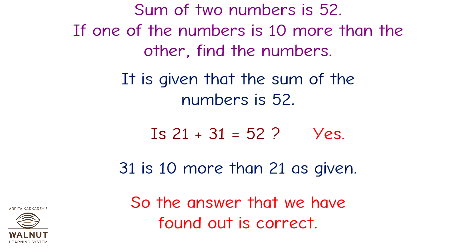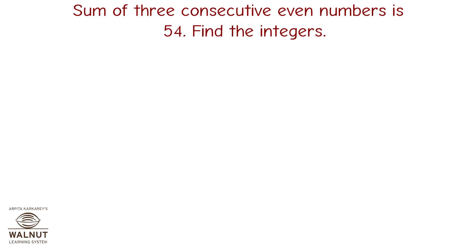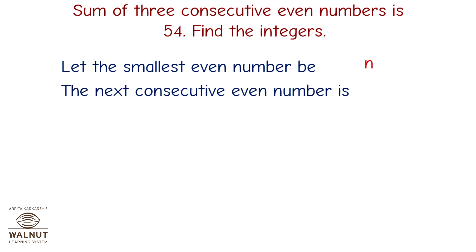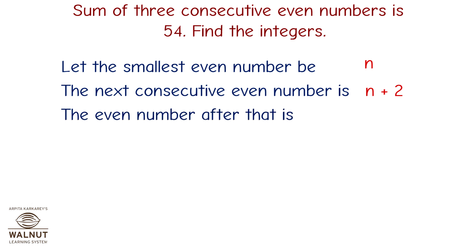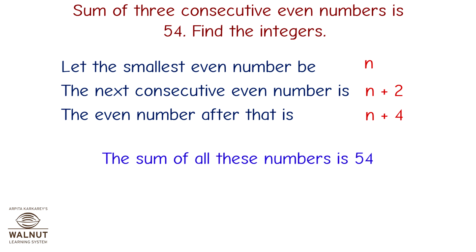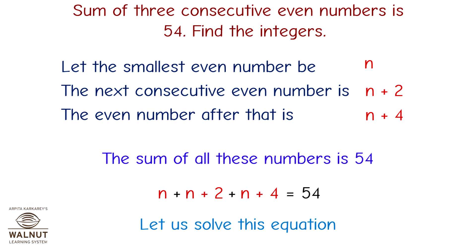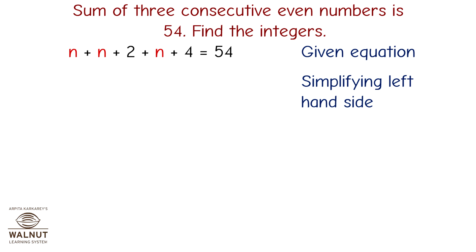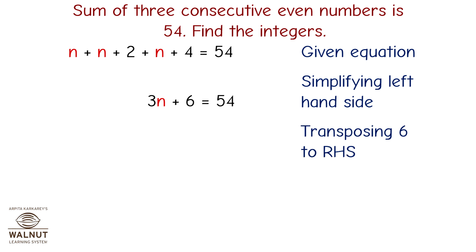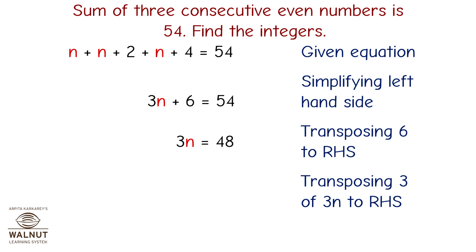Let's look at another word problem. The sum of three consecutive even numbers is 54. Find the integers. Let the smallest even number be n. The next consecutive even number is n plus 2, and the even number after that is n plus 4. Their sum is 54: n plus (n plus 2) plus (n plus 4) equals 54. Simplifying the LHS: 3n plus 6 equals 54. Transposing 6 to the RHS: 3n equals 54 minus 6, which equals 48.